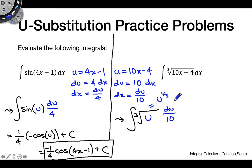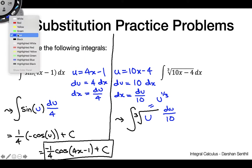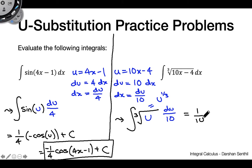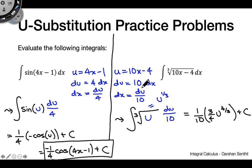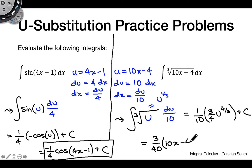Thinking of 1 as three-thirds, we add one to the exponent to get four-thirds. So we have one-tenth times three-fourths u to the four-thirds plus c. Plugging back in for u and multiplying the fractions, our final answer is 3 over 40 times (10x minus 4) to the four-thirds plus c.